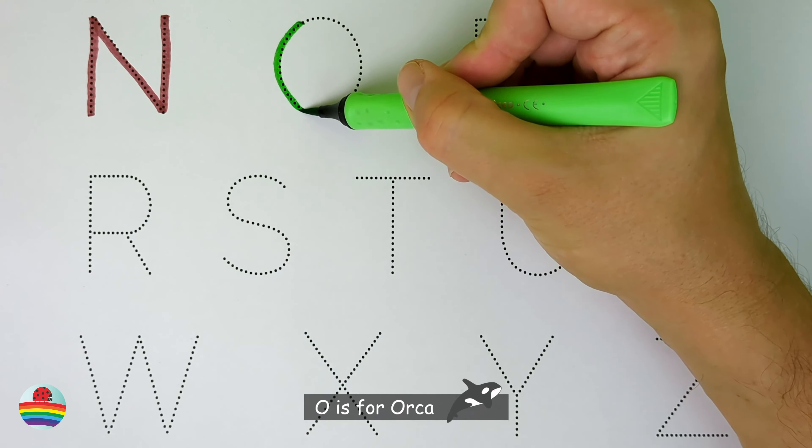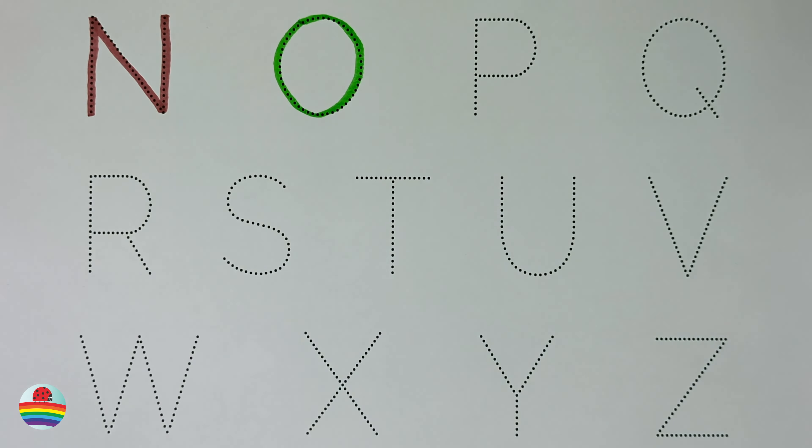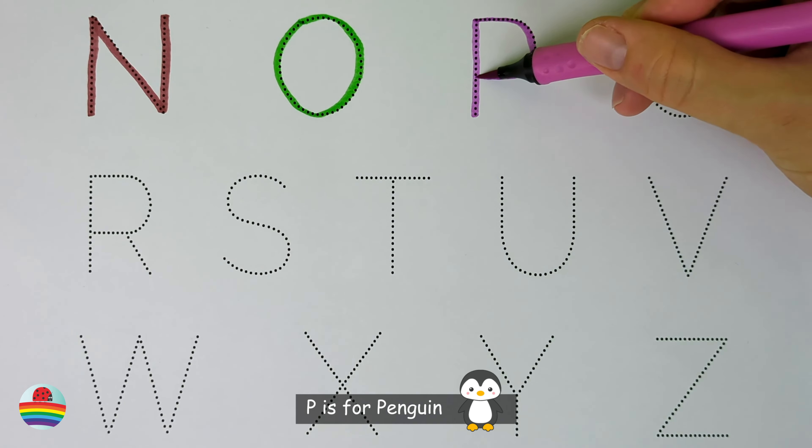O. O is for orca. O. P. P is for penguin. P.